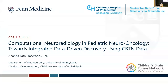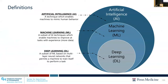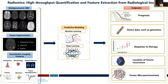When we talk about deep learning or machine learning, they are a subset of AI methods. Radiomics, briefly defined, is a high-throughput quantification and feature extraction from radiological images, involving collection of MRI scans, pre-processing, tumor sub-region segmentation, extraction of quantitative imaging features, and using machine learning or deep learning for predicting an endpoint of interest — such as prognosis, progression-free survival, prediction of omics data, or response to treatment.